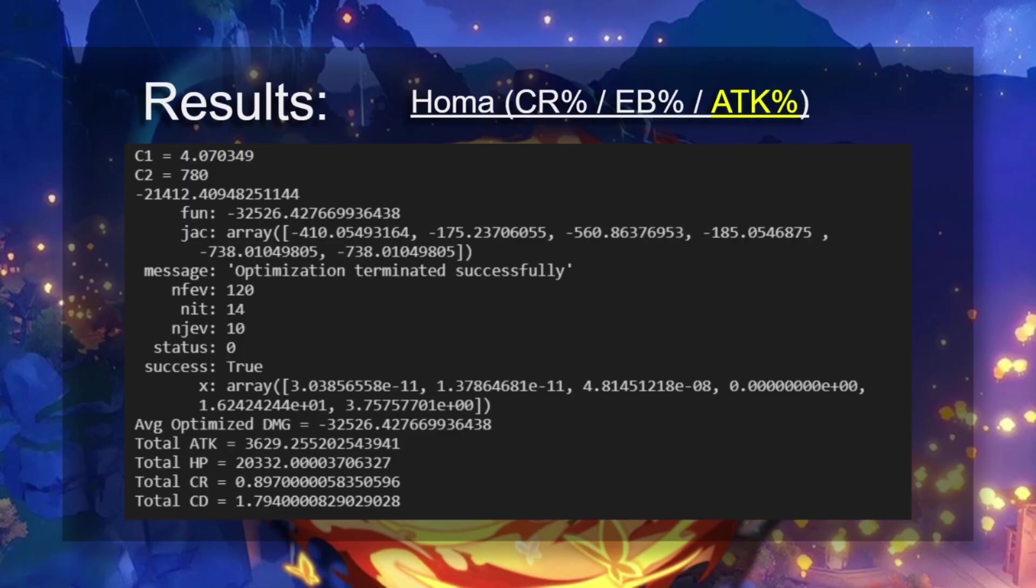Now we can look at the results of basically the code. Assuming that we are using a Homa, with artifact main stats of crit rate, elemental bonus, and attack percent, we can see at the bottom here the constants. This X array shows us where did the rolls go. What we can see here is that when we've got an attack percent artifact, crit rate is the second last value. We've got 16 rolls going into that, and then about 4 rolls going into crit damage. And what happens with this is that it optimizes the ratio here, and we can see this is about 90%, and this is about 180%. And that gives you that 1 to 2 ratio that I keep talking about.